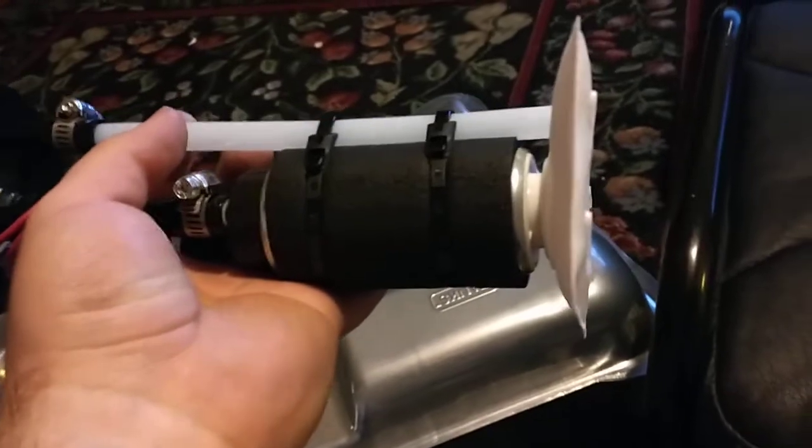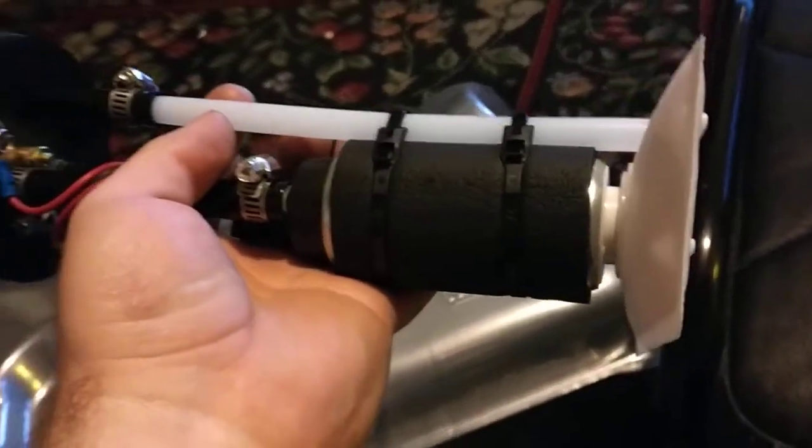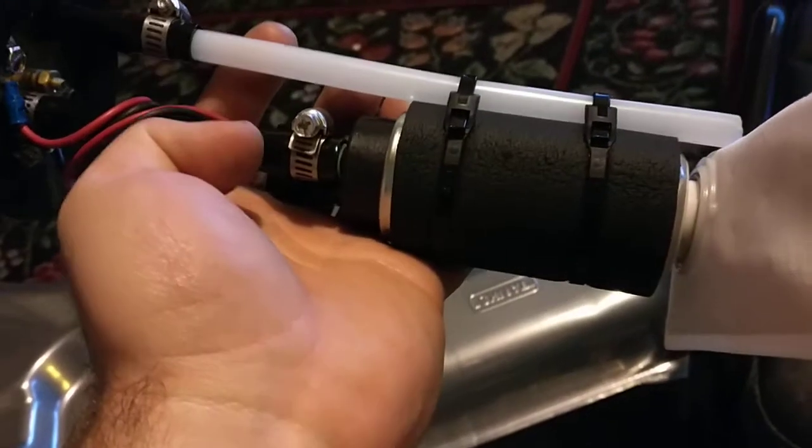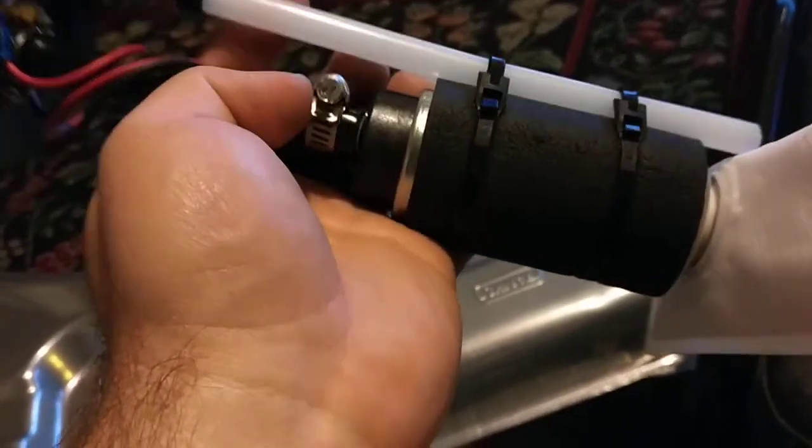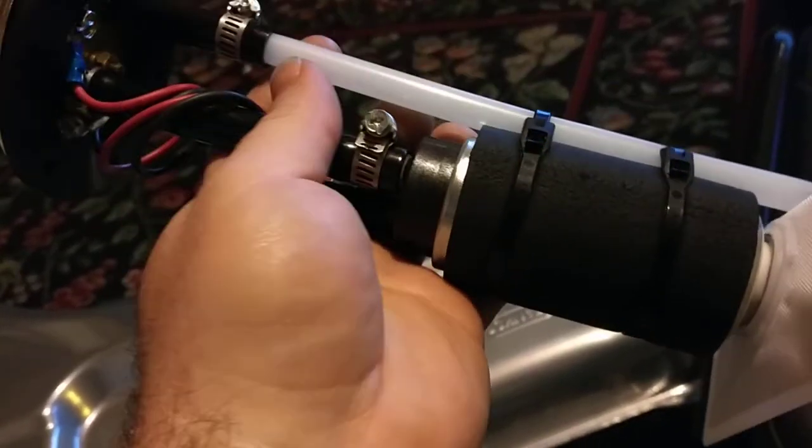And I used dykes to cut the hose. And then straightened it out. Then use a hair dryer to heat up this tube and then slide it over the Walbro high pressure fuel pump.